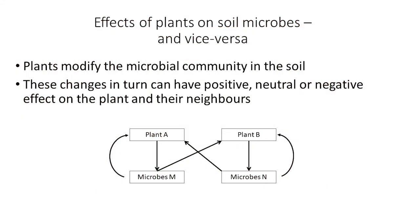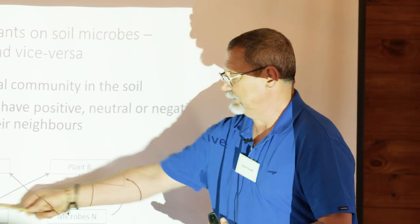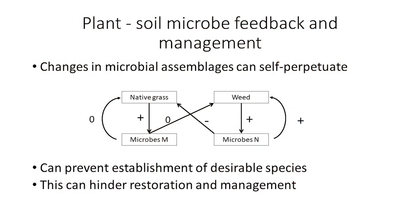In the last 10 to 20 years or so, we have developed this model of plant-soil-microbe feedback. Essentially, this model shows that individual plant species can change the soil microbial communities in different ways. For example, plant A here favours an assemblage of microbes we call M, while plant B can favour a different assemblage of microbes. In turn, these microbes can have different effects on the plants. So each of these species is going to have an effect on the plant that favours them, and also on the neighbouring plant. This is important because, depending on the combination of positive and negative effects between microbial assemblages, you can have situations that self-perpetuate and establish a plant community.